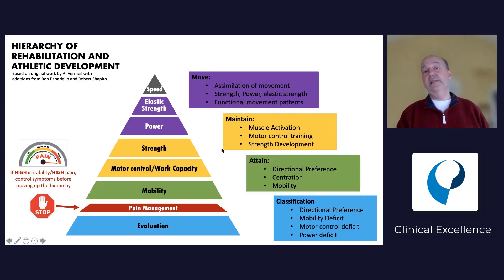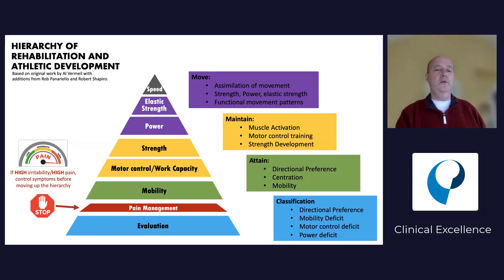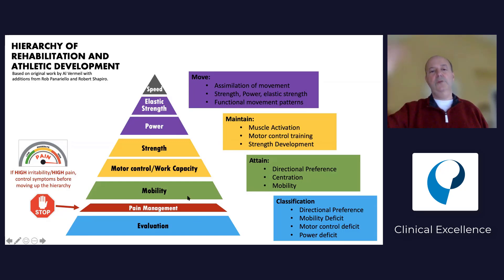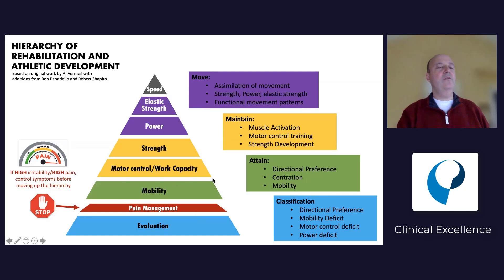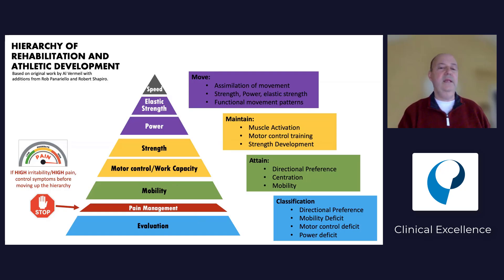The hierarchy of rehabilitation and athletic development: always go through the pyramid. Start at the bottom. If there's pain, treat that first. Then work mobility, motor control, strength, power. No matter who the patient is, no matter what the classification, still go through that pyramid. We'll talk about that through the rest of the mentorship, and you'll see that within the mentorship each body part will get more specific - what is the mobility requirement for the knee, for the shoulder, etc. - and we'll work our way through.